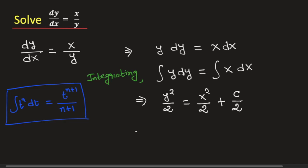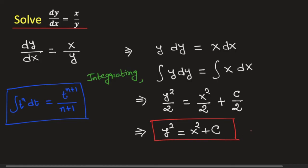Simplifying this, we will get y squared is equal to x squared plus the integration constant C. This is the solution of the given differential equation and this is our final answer. Thank you.